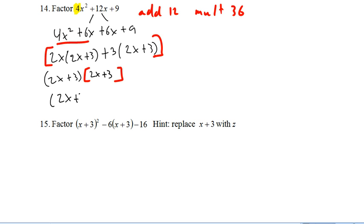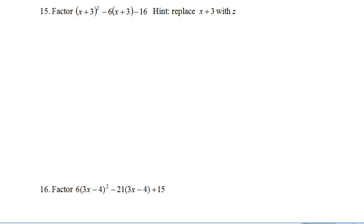Another way I could write this, because it's 2x plus 3 times 2x plus 3, is 2x plus 3 squared. Number 15 looks a little scary at first, but we can make it look more familiar by introducing a new variable z and saying z equals x plus 3. Now I've got z squared minus 6z minus 16, and I just need two numbers that add to negative 6 and multiply to negative 16. That leaves me with z minus 8 times z plus 2.